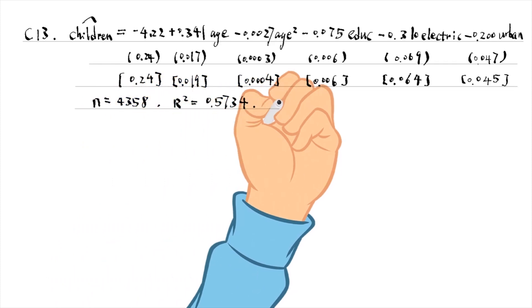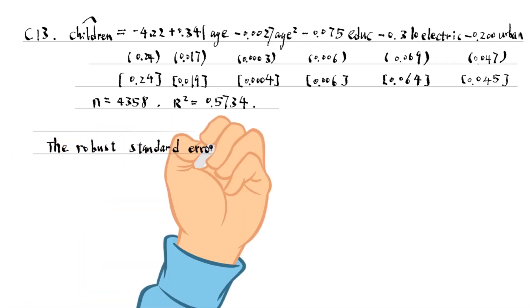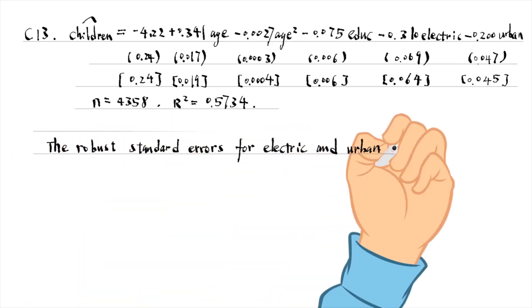The robust standard errors for electric and urban are smaller than the non-robust ones.